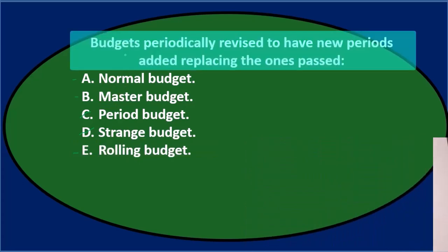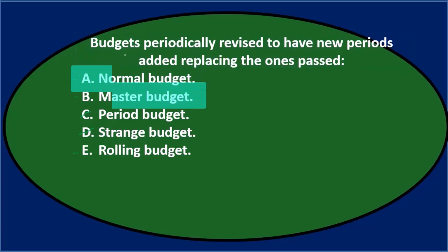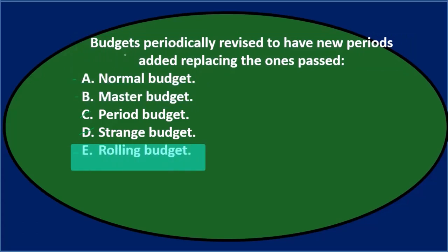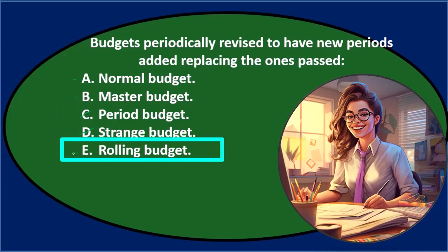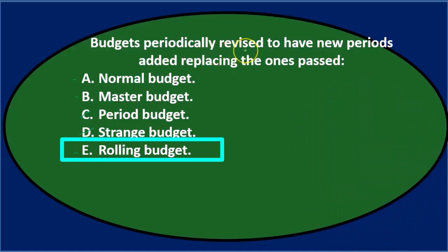Let's narrow it down: budgets periodically revised to have new periods added, replacing the ones past — either A) normal budget, B) master budget, or E) rolling budget. The normal budget and the master budget are kind of similar — the master budget is the normal kind of budgeting process. E is the one that's a little different, and that sounds like what's happening here: budgets periodically revised to have new periods added, replacing the old ones. That sounds like a rolling budget, and that's actually what it is.